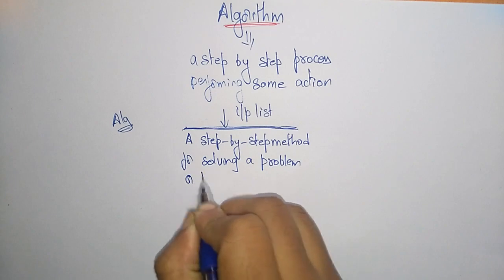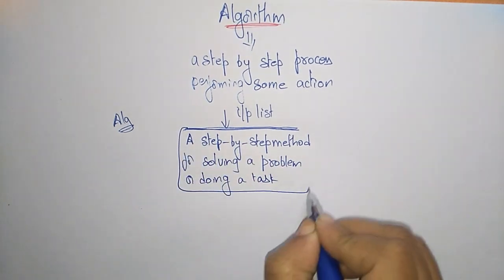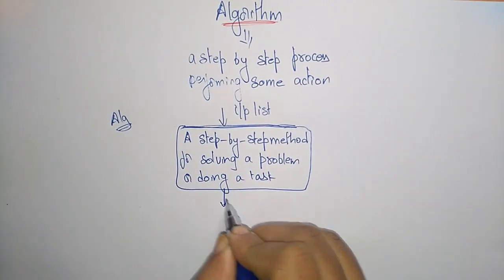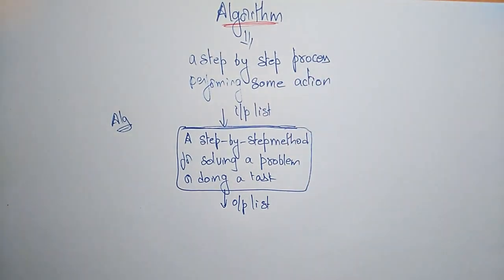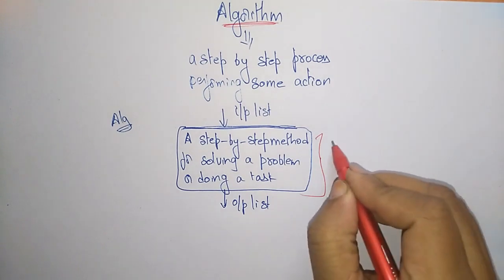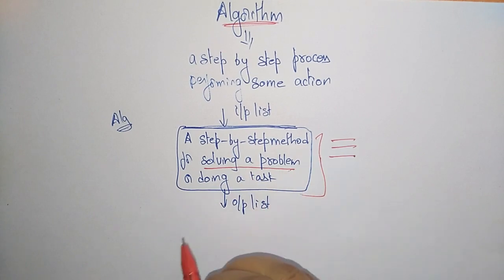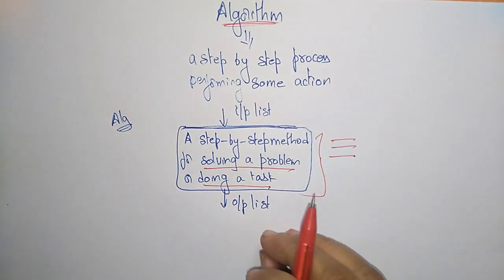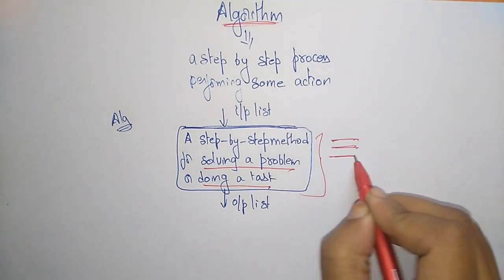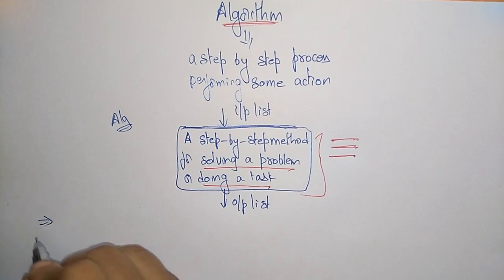The algorithm takes the input list and performs a step-by-step series of methods, giving the output as a list. We are doing this step-by-step method for solving a particular problem or doing a particular task. Those requirements will be written in a step-by-step manner — that is what we call an algorithm.